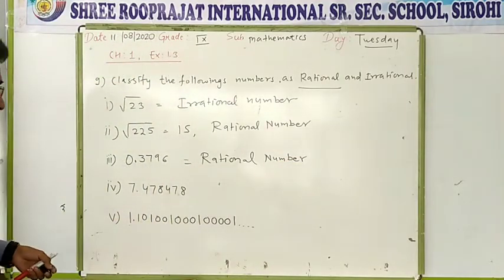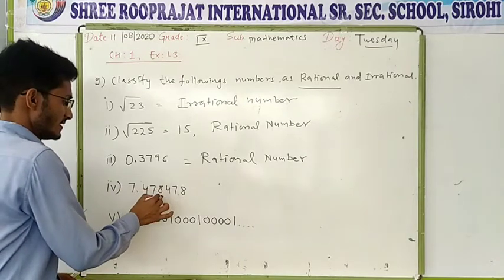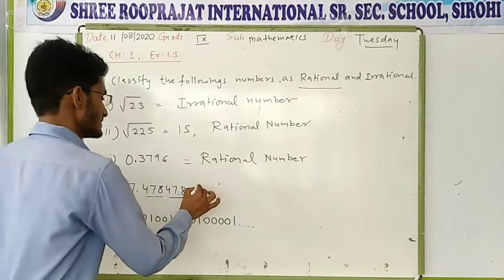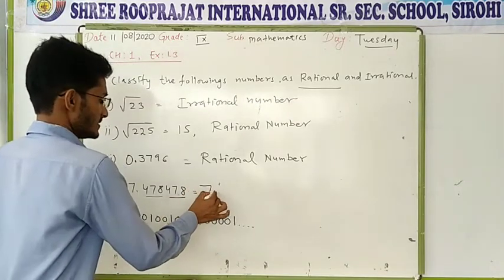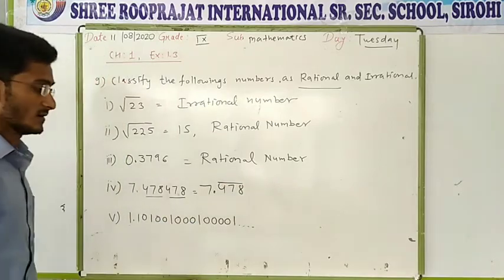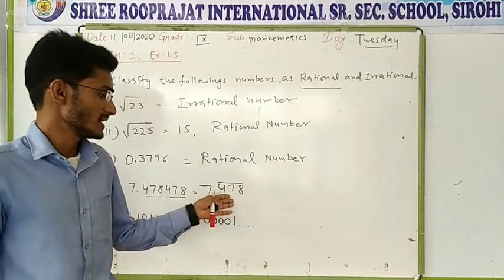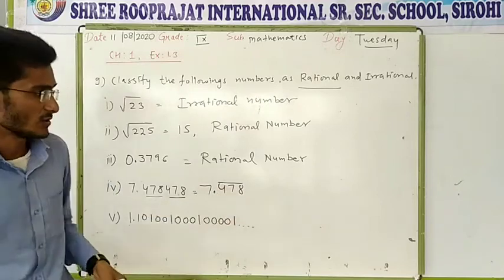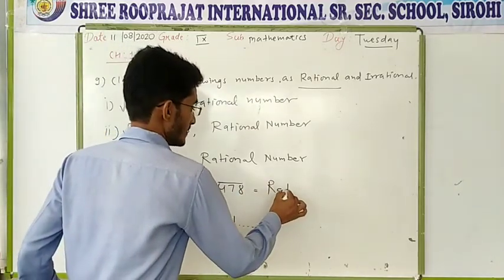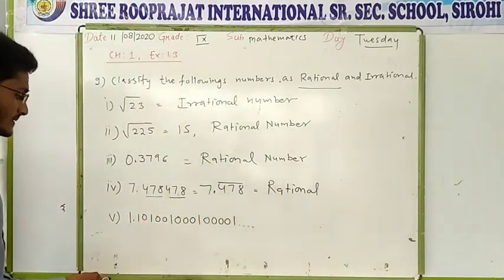Next one, you can see the number 7 decimal 478 and 478 — these are repeating itself. So you can say it is 7 decimal 478 bar. So it is non-terminating but the number is repeating itself, it is recurring. So it is again a rational number because the numbers are repeating itself.